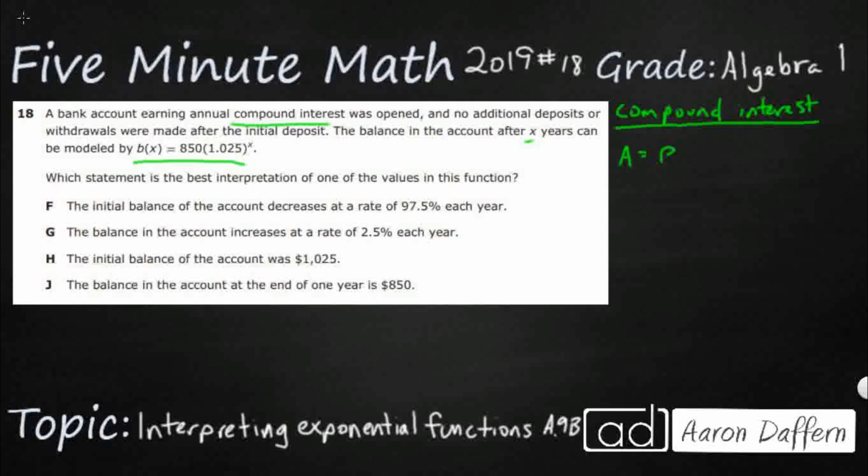A equals P times 1 plus R to the t power. And so now we're dealing with the same thing which we could use this actual formula but I want to relate it to our exponential functions. So what does each of these terms mean? Well that P is going to be your principal. So that's your initial starting amount. So that's typically what that constant is. How much money did you start with?